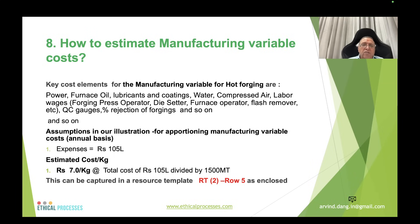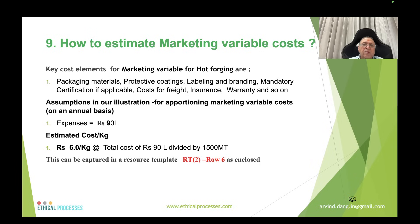Manufacturing variable costs in a forging plant include power, furnace oil, lubricants, oils, coatings, water, compressed air, and labor wages such as forging press operators, die setters, furnace operators, flash removers, and quality control. Assuming total cost of ₹105 lakhs per annum, cost per kg = ₹105 lakhs ÷ 1,500 metric tons = ₹7 per kg, captured in row 5.